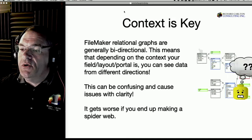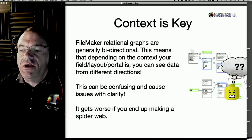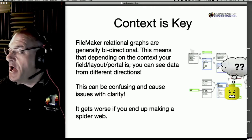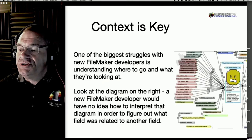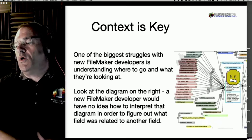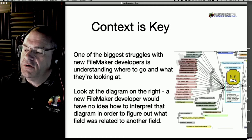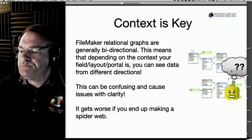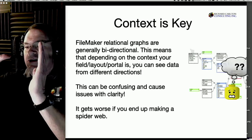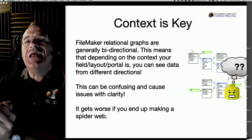Context is key. If we have a layout based upon a particular box on the graph, it can only see whatever's connected to it - that's all it can see and talk to. As you build a solution and get success, you start building more and more, keep adding and adding, and before long you get the spider mess and things get very confused and chaotic.